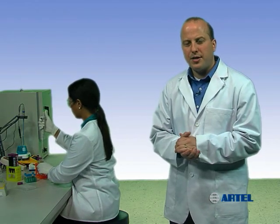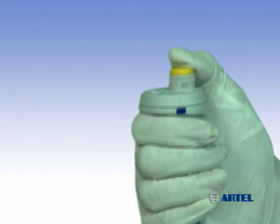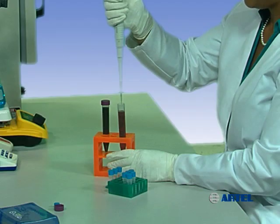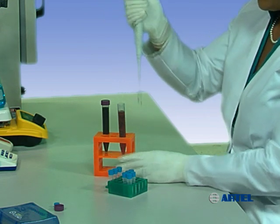Another pipetting technique is called reverse mode. When using reverse mode, depress the plunger past the first stop. Immerse the pipet tip into the sample and release the plunger. This will result in more target volume being aspirated than desired.